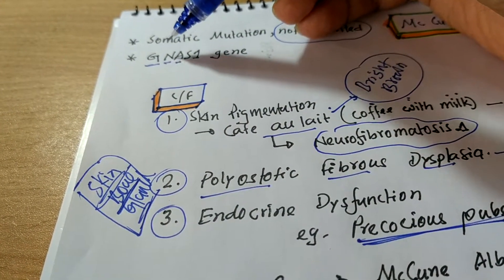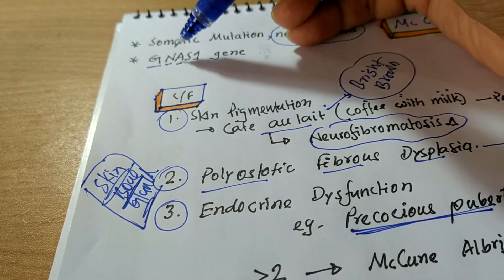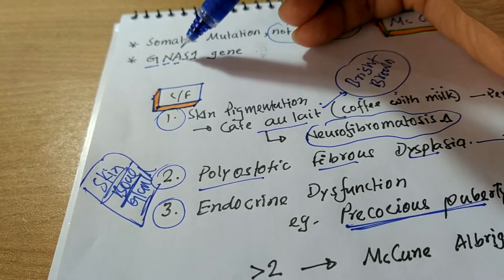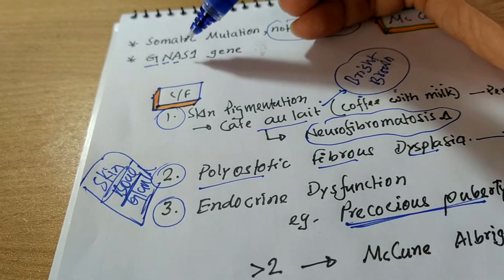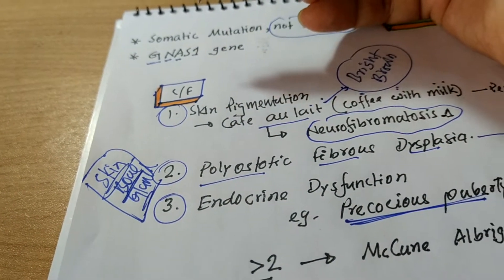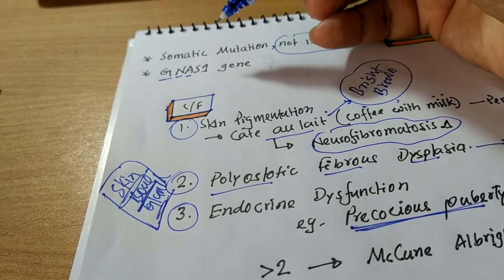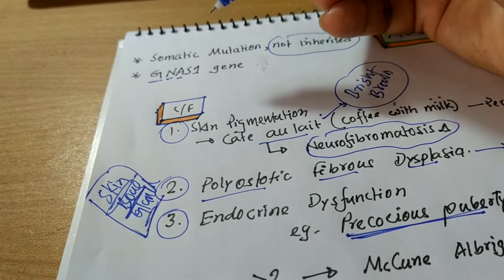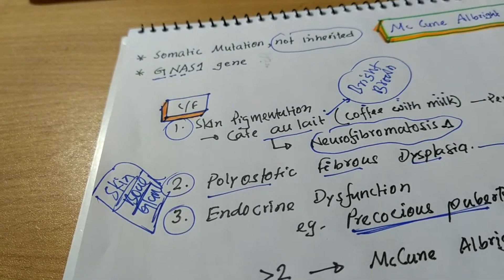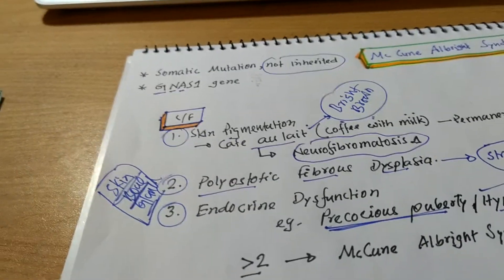What do you mean by GNAS? Guanide nucleotide alpha-stimulating gene. Actually, it is a gene that encodes the stimulatory G protein coupled enzymatic transduction system. So the mutation of this gene is responsible for McCune-Albright syndrome.